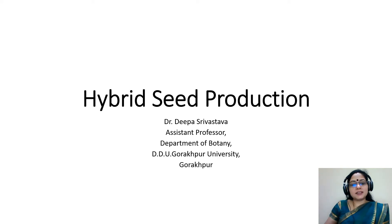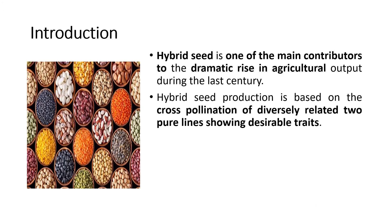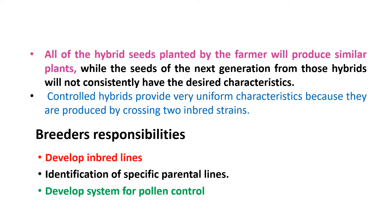Today we will study hybrid seed production. Hybrid is one of the main contributors to the dramatic rise in agricultural output during the last century. Hybrid seed production is based on the cross pollination of diversely related two pure lines showing desirable traits. Hybrid seeds are preferred by farmers because all the hybrid seeds planted will produce similar plants.